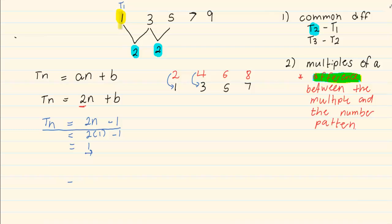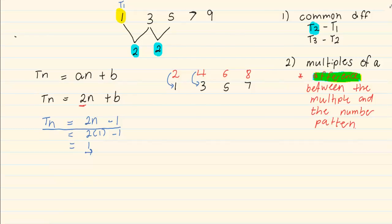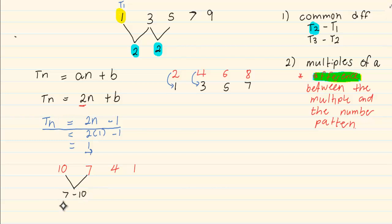Now let us try another one, working with a negative. If I am given the following number pattern: 10, 7, 4, 1. The first step is to check what is the common difference. Remember we are working with 7 minus 10, and not 10 minus 7, which equals minus 3. So we know now that we are going to have TN is equal to minus 3N plus B. The minus 3 is our common difference.